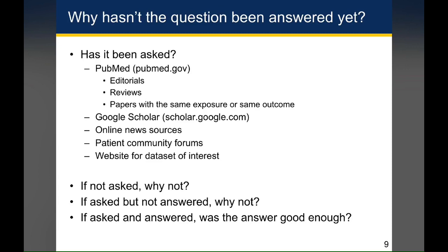Other things that are definitely not worth discounting are online news sources. While the news sources are not going to be the source of primary literature, they can help you figure out how big of a problem something is, because typically the important problems of our day are things being reported in the news media in addition to the scientific literature. This is not an end point, but it may be a good starting point to find out what are the current controversies and current questions worth looking into.